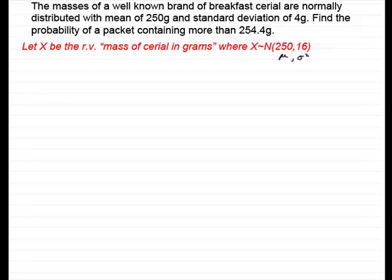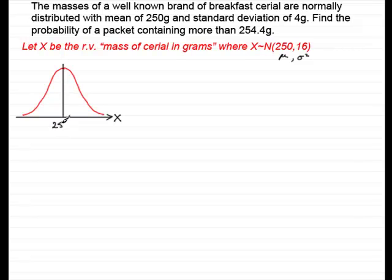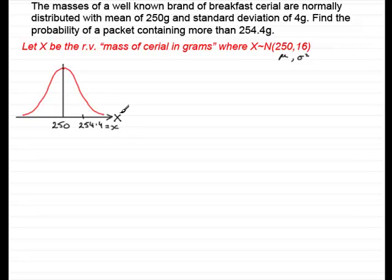Now I need to draw a sketch of the normal distribution for the random variable X, the mass of cereal. The central value represents the mean, which is 250 grams. We're looking for cereal containing more than 254.4 grams, so I need to place that observed value on the graph — that point is 254.4, and we call that the observed value little x. Random variables have capital letters; observed values have small letters.